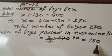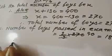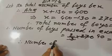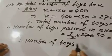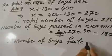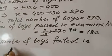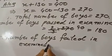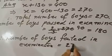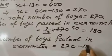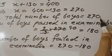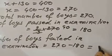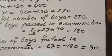Then how many boys failed in the examination? Number of boys failed in examination equals total number of boys minus number of boys passed in the examination. Total number of boys is 270 and number of boys passed is 180. If you subtract, your answer is 90. Is it clear to you?